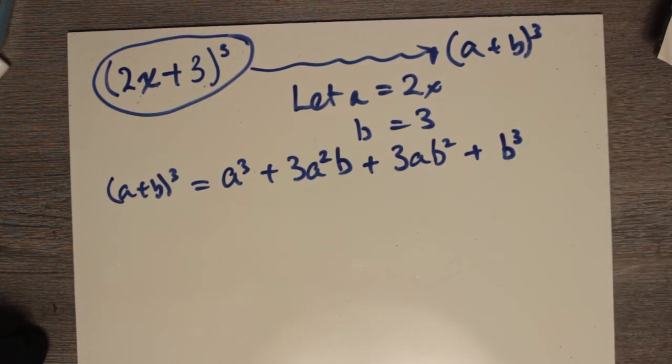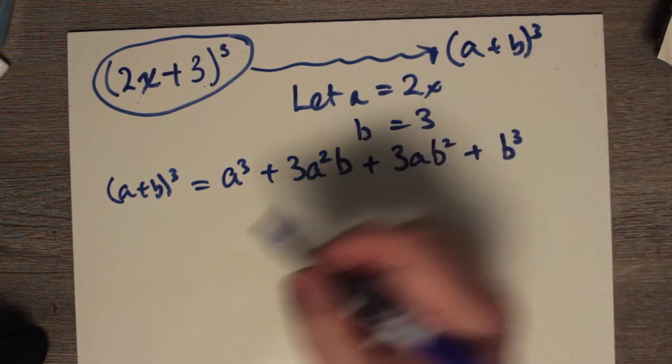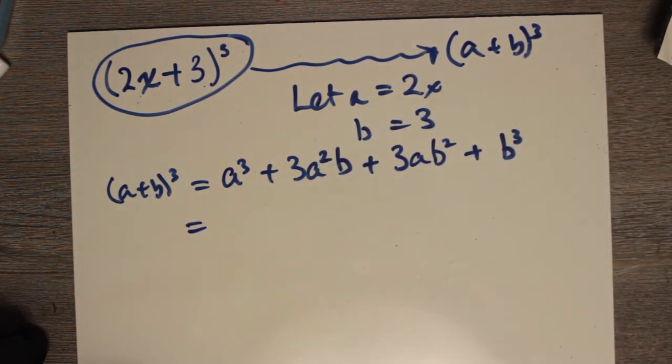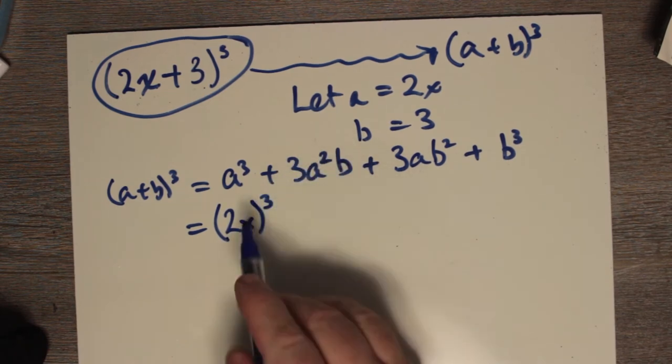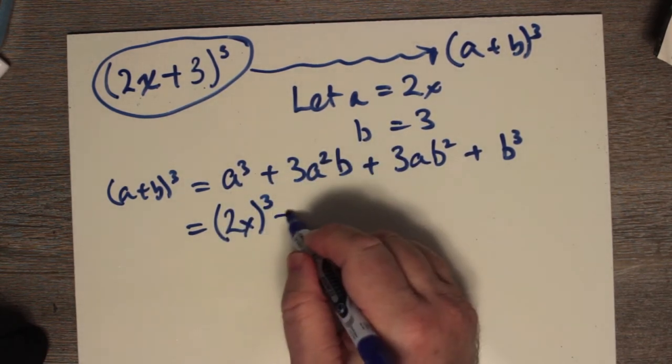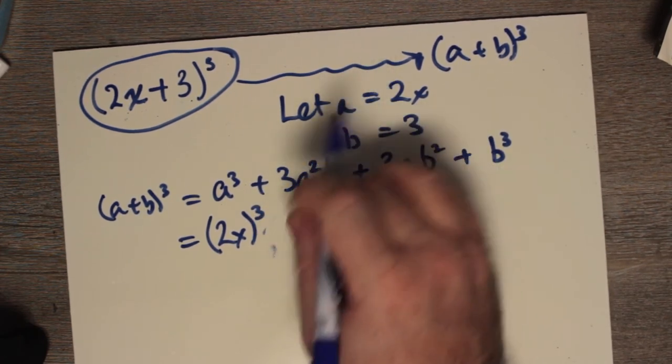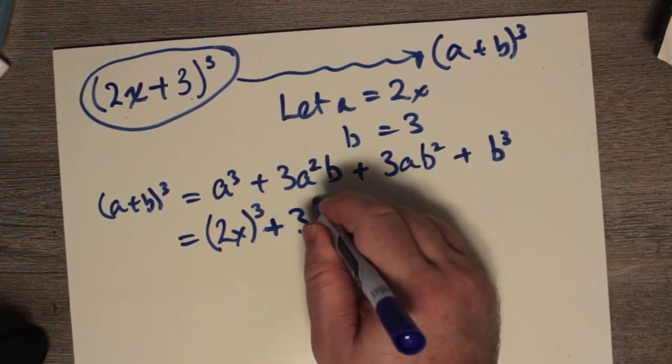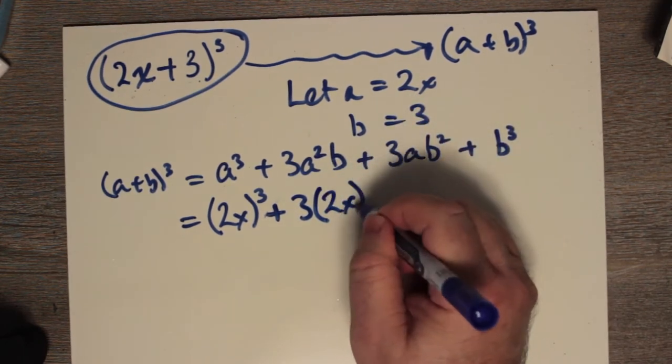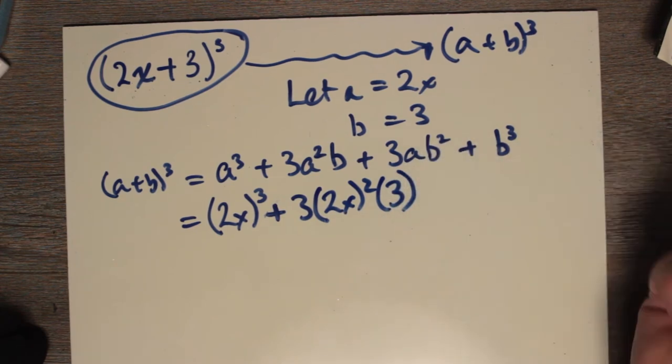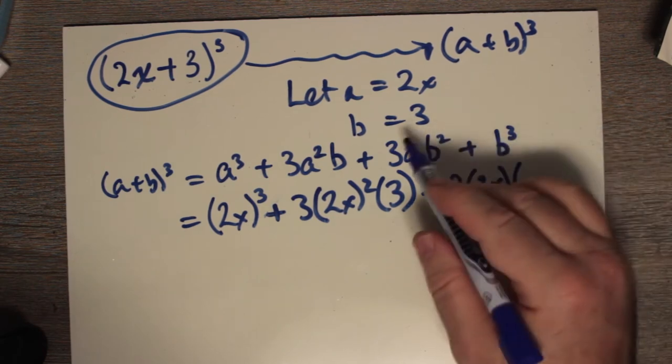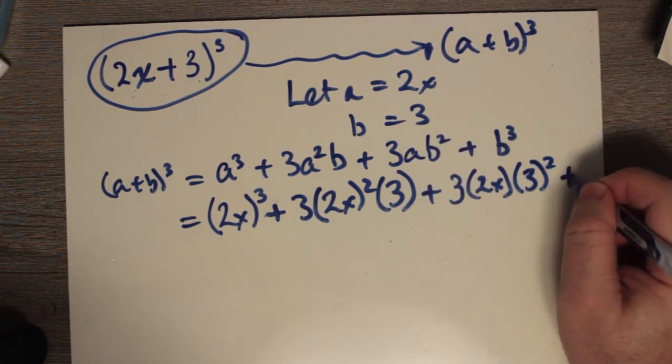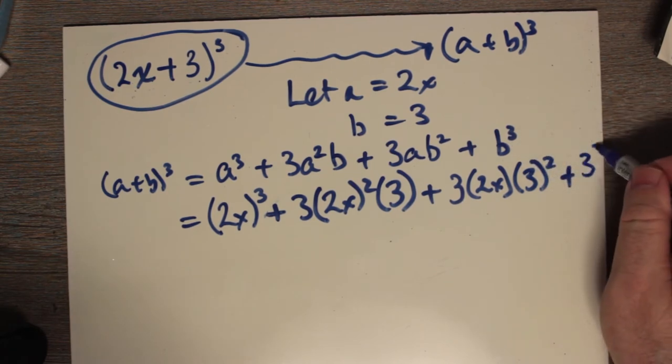Now, to do the substitution step. We have to substitute this for A and this for B and use our laws of exponents to guide us through. So, this becomes 2x all to the power 3 because that's what A is, right? Plus, we add to it, 3, and then A squared, 2x, all squared, times 3. Okay? Plus 3, and then A is 2x, times B squared. Well, that's 3 squared. Plus, the last term is B cubed. That's just 3 all cubed. Okay?